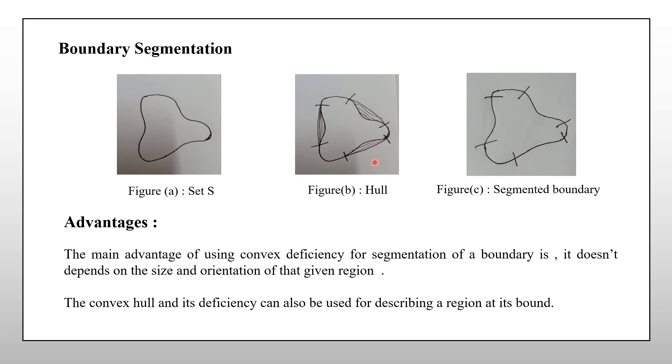So here these are the partition points. The partition points on the original boundary represents the segmented boundary. So here the figure C represents the segmented boundary. The advantages by this convex deficiency method is it does not depend on the size and orientation of that given region and the convex hull and its deficiency can also be used for describing a region at its bound. Thank you.